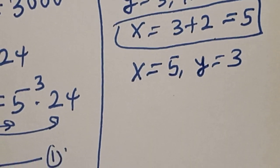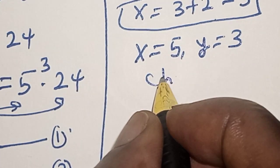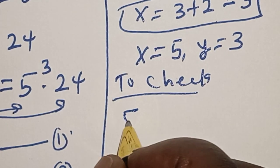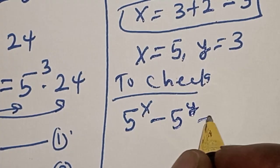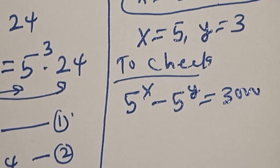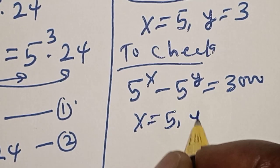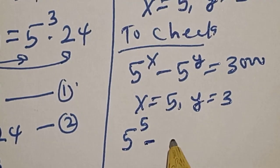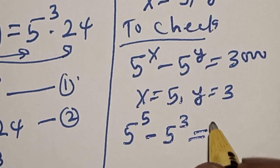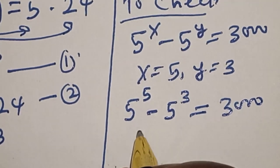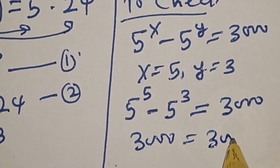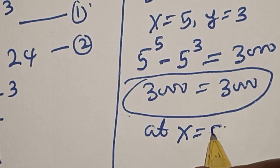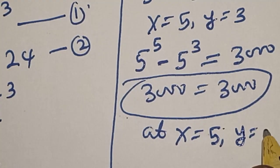Let's check to confirm if our answer is right. Given the equation 5 raised to power x minus 5 raised to power y must equal 3000, substituting x equals 5 and y equals 3, we get 5 raised to power 5 minus 5 raised to power 3, which equals 3000. The left-hand side equals the right-hand side, confirming our answer is correct.